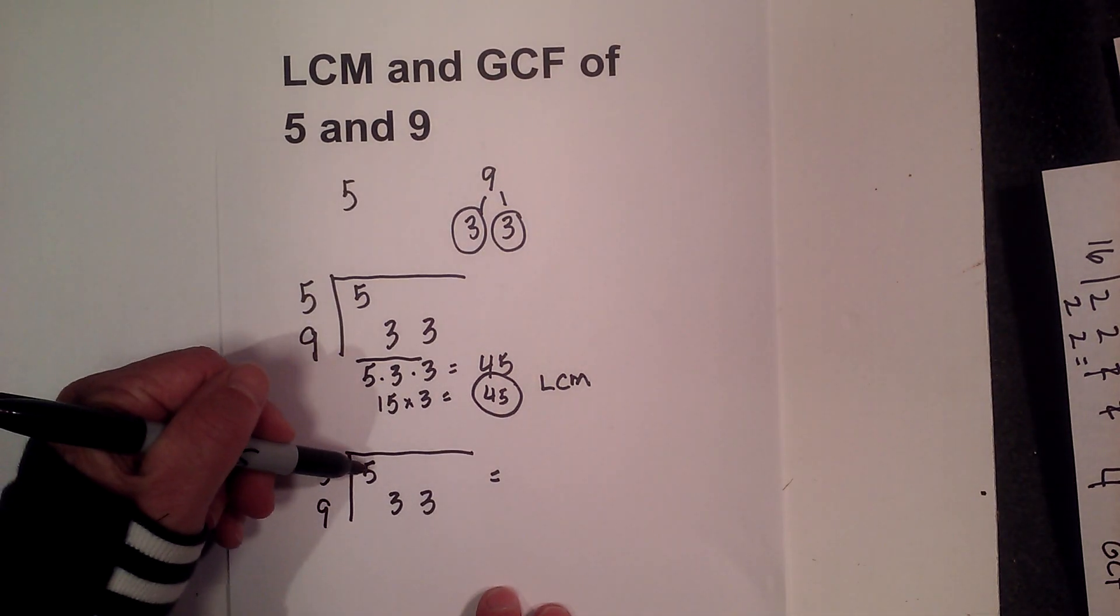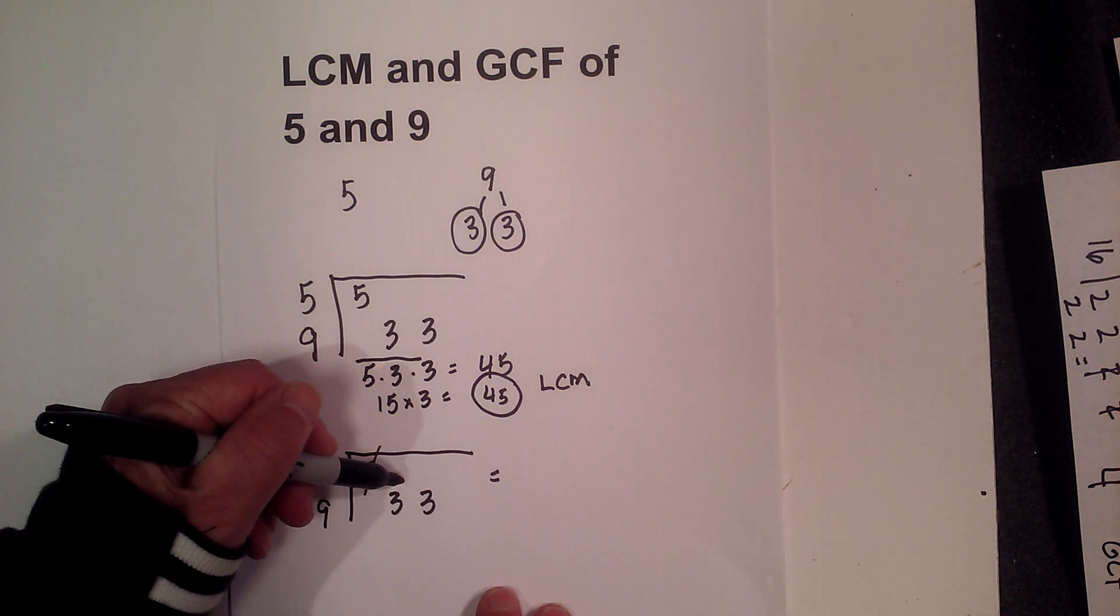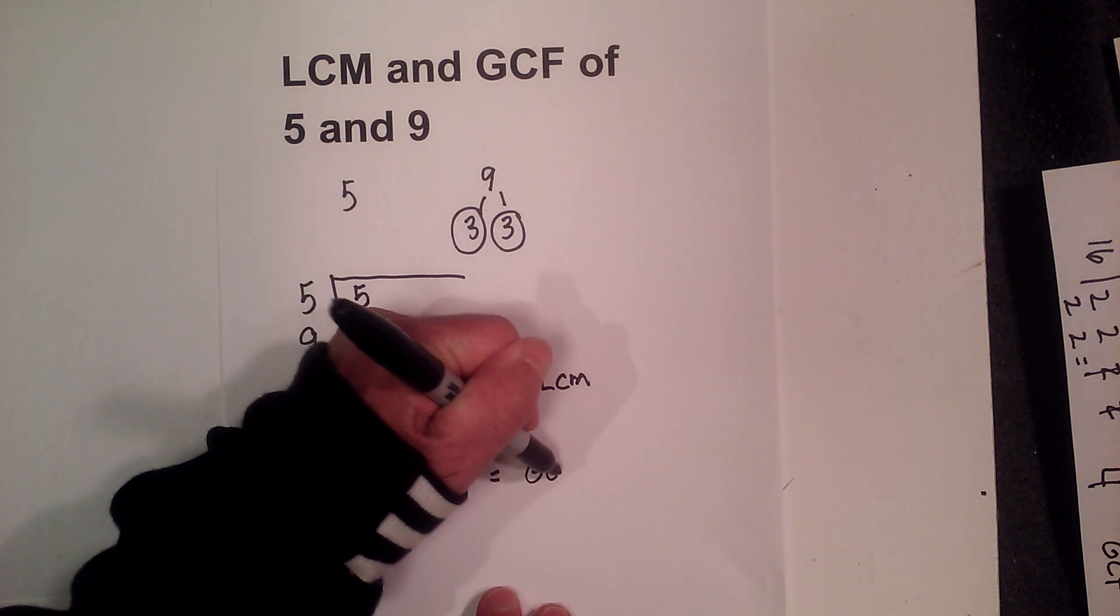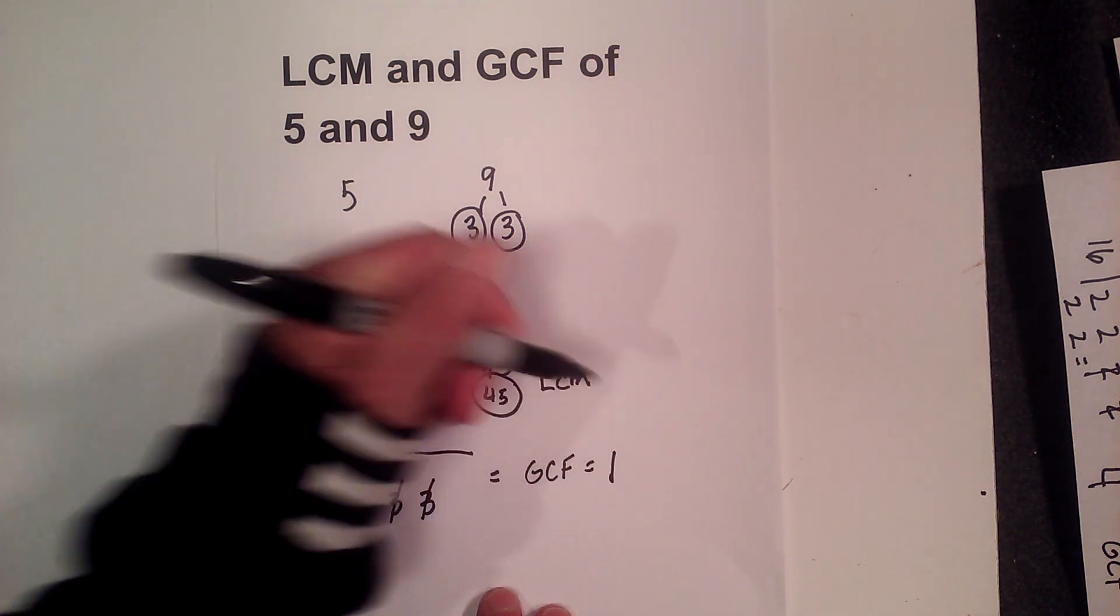You have to have vertical pairs. And so you don't have a vertical pair here, you don't have 1 here, nor here. So when that's the case, the GCF equals 1.